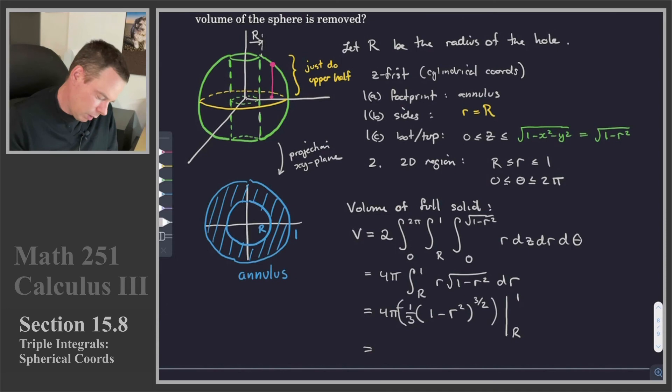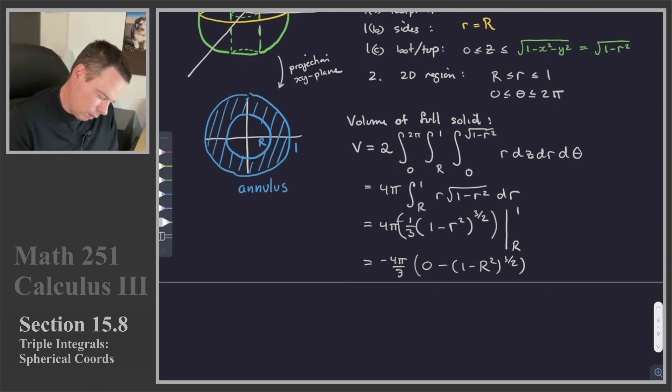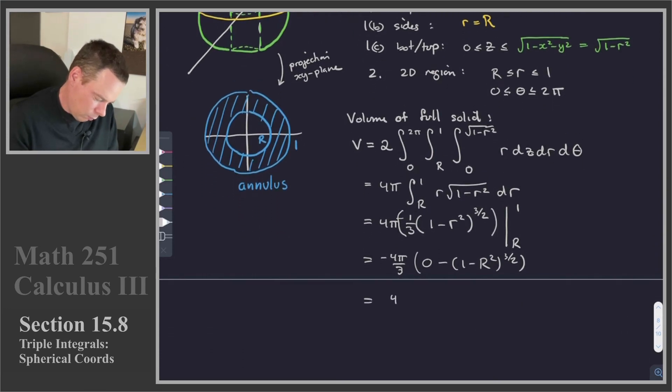That goes from r to 1. And so this becomes negative 4 pi by 3. Plugging the 1 in gives me a 0 minus a 1 minus capital R squared to the 3 halves. And so there is the value of our full sphere with the hole cut out of it.